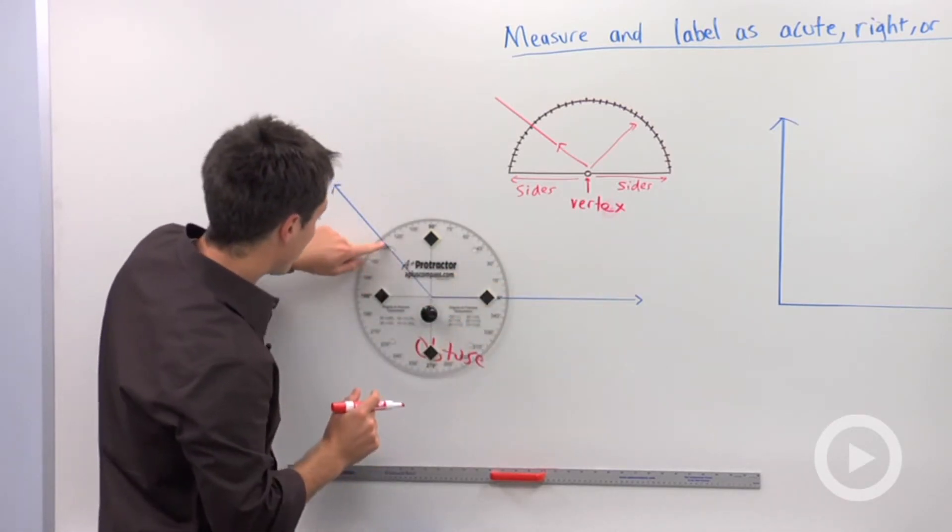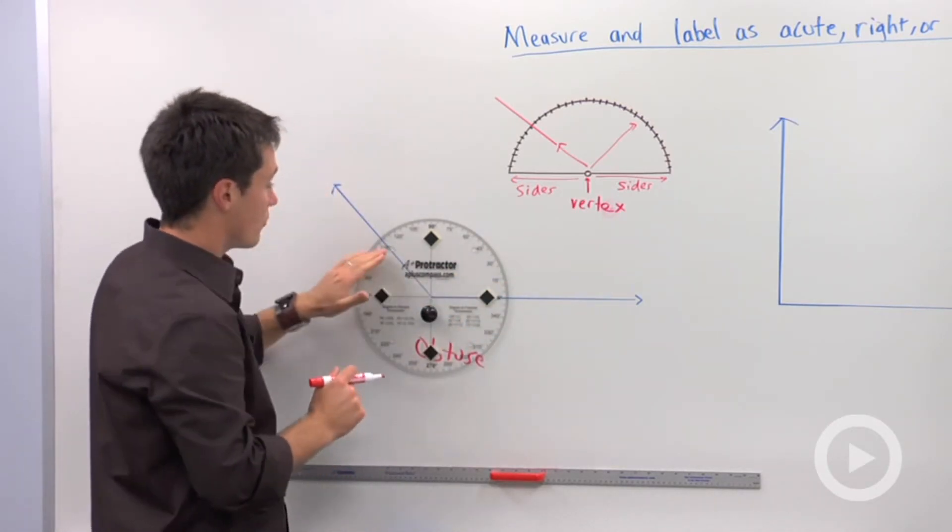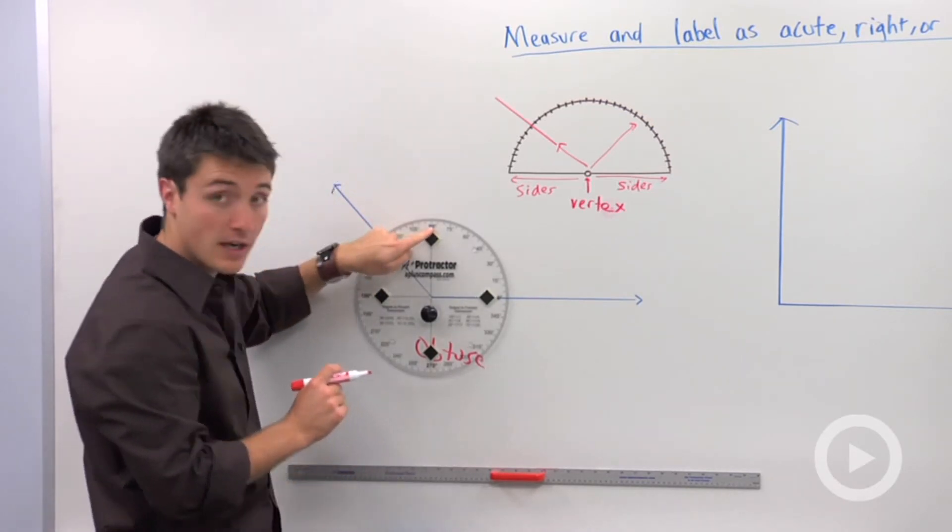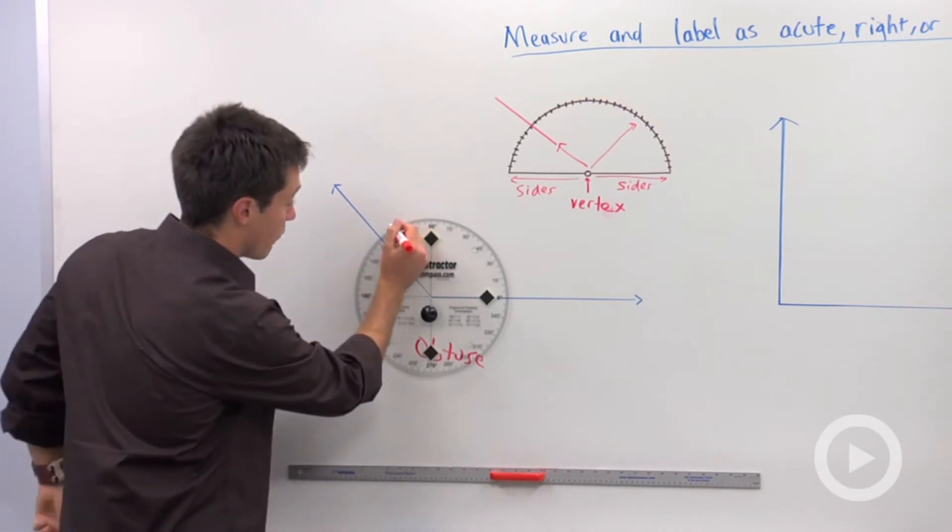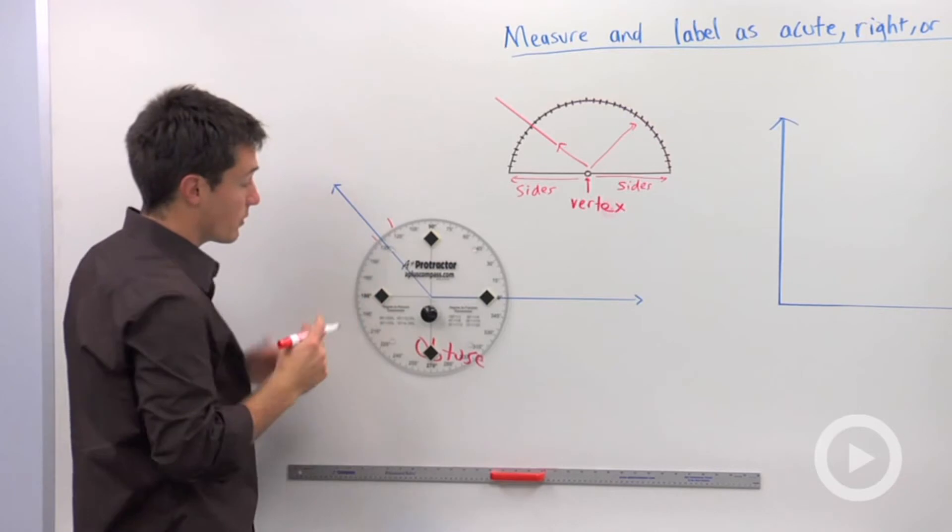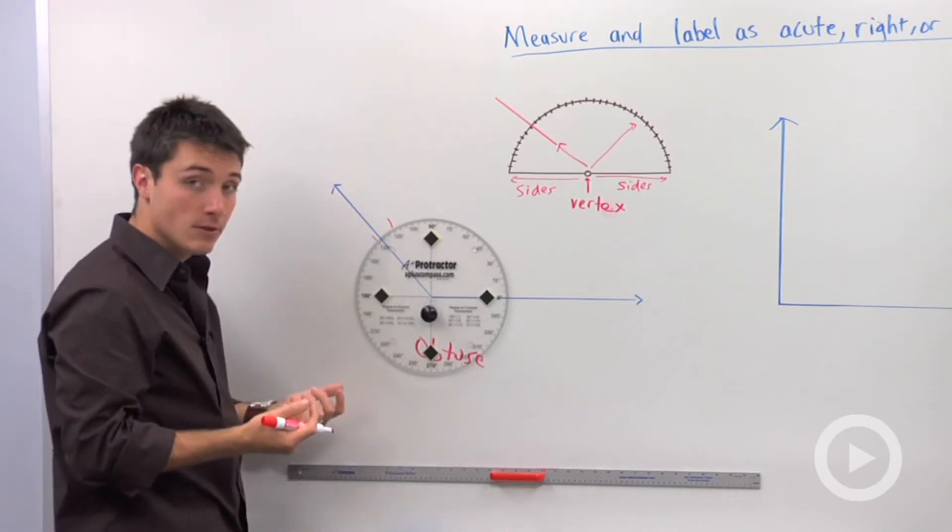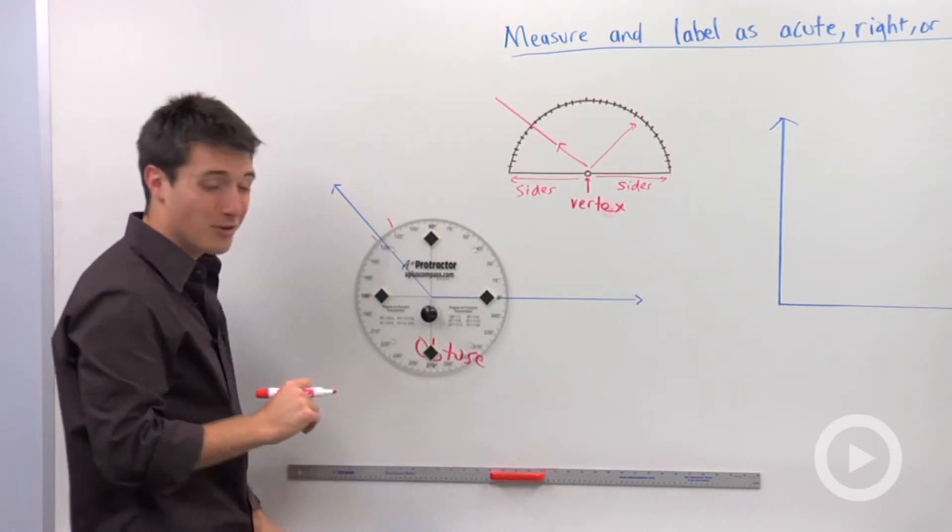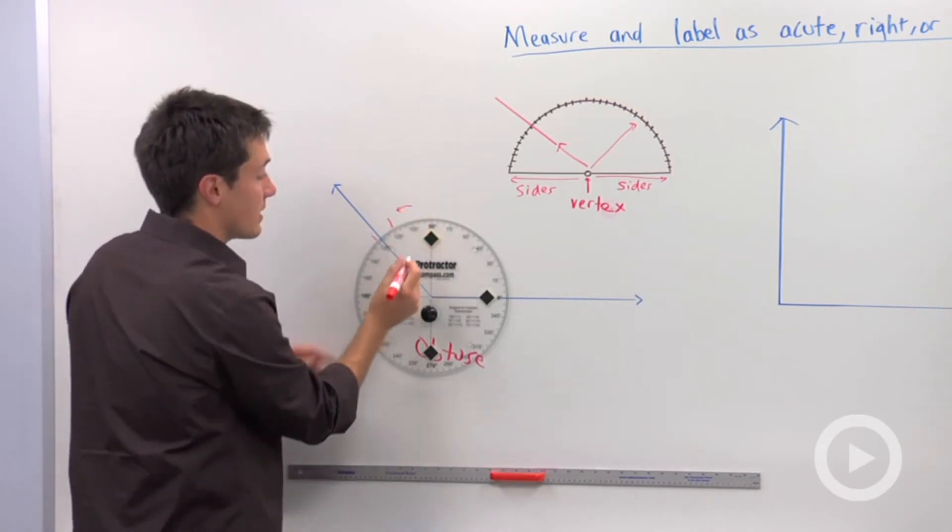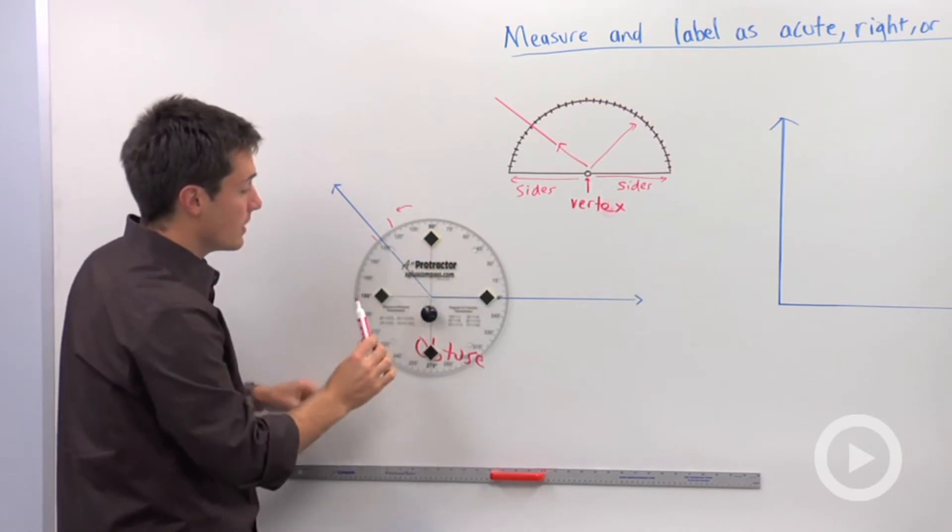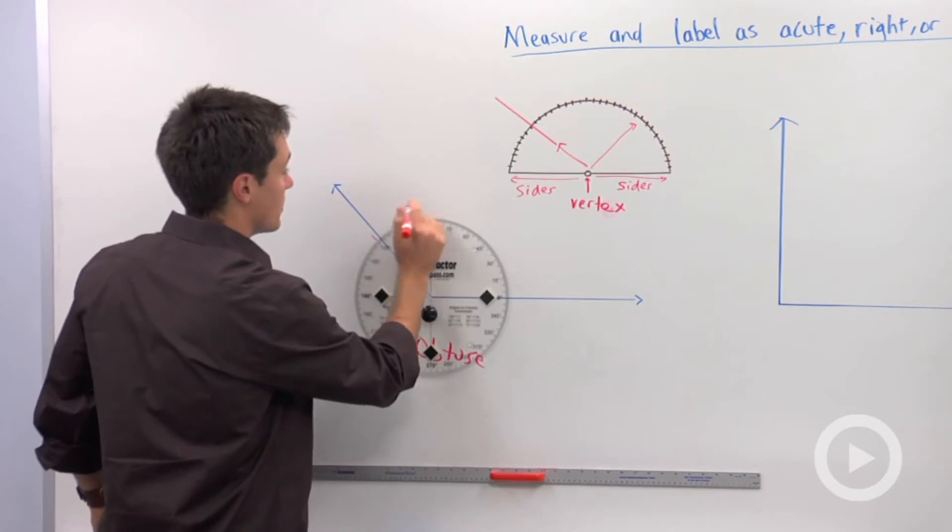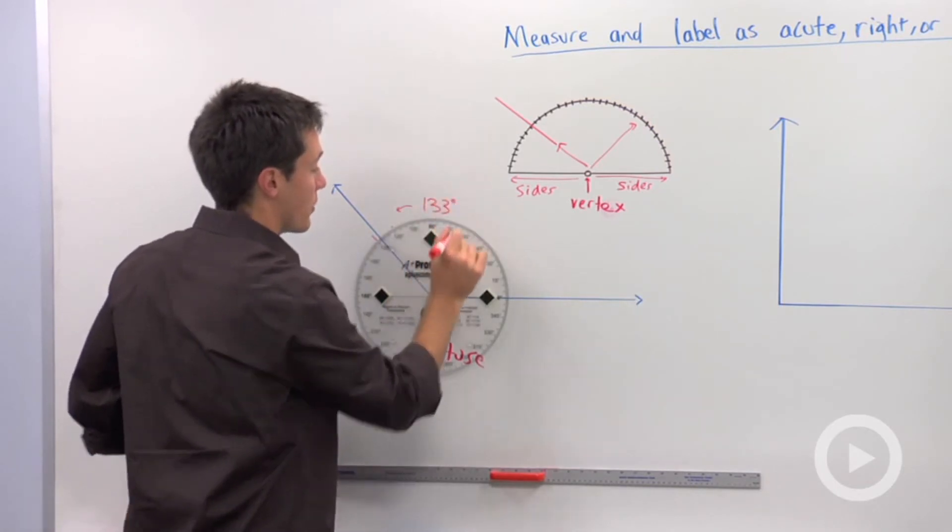And then I'm going to say, well, where does this other ray cross the edge of my protractor? And I see that that distance, if here's 90, so we're going up. So we have 120 right here, and I have 135 right here. So the question is, is this 137, or is it 132? Well if I look, my numbers are increasing as I go further and further away from 90 degrees. So I'm going to be two back from 135, or it's going to be 133 degrees.